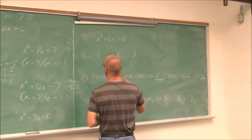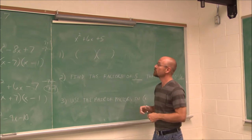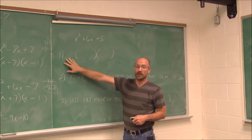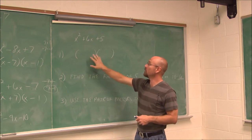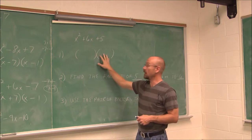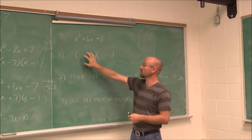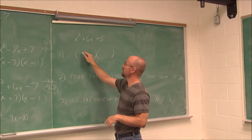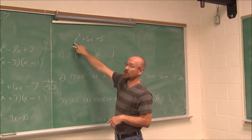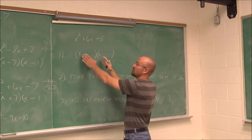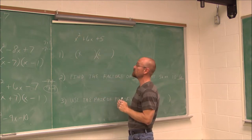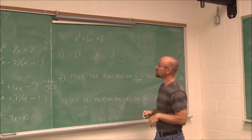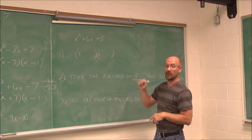Let's review the process. Step one: write out two binomial parentheses. Because this coefficient is 1, x times x gives x squared. So write your two parentheses with an x as the first term in each.